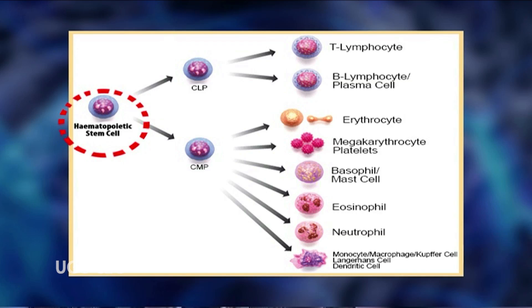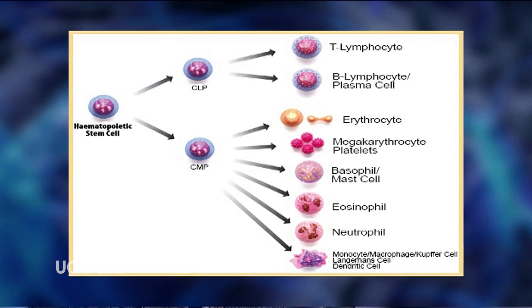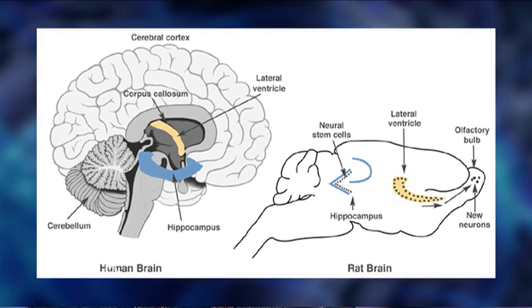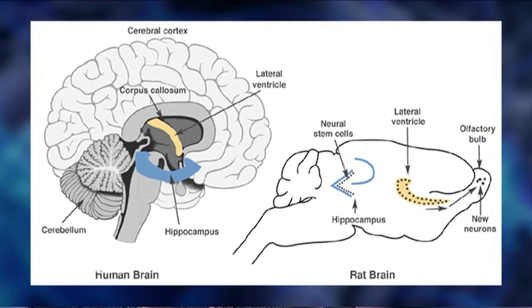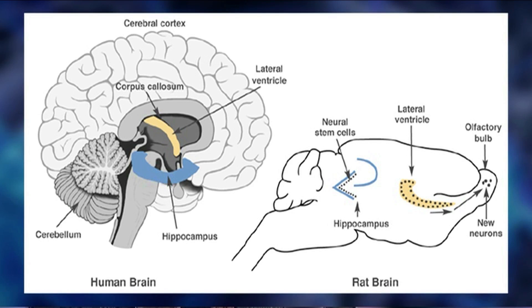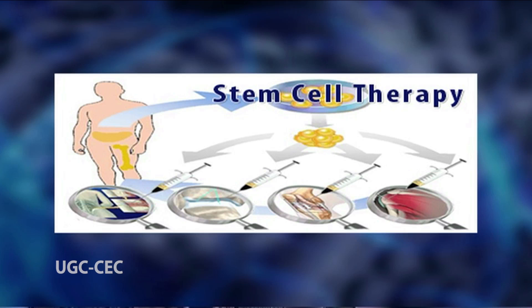Most, if not all, organs in a human adult contain stem cells capable of replacing the particular cells of the tissue in which they are found. Even the adult brain contains stem cells that can generate new neurons and glial cells. The human heart contains cardiac stem cells capable of differentiating into cardiomyocytes of the myocardium and the heart's blood vessels.